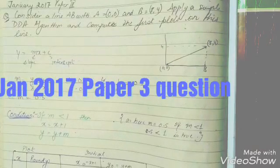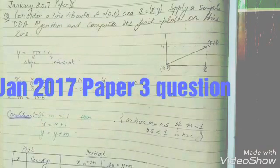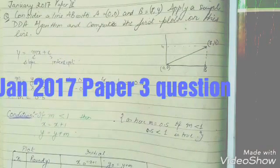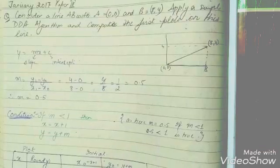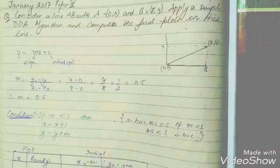This question was asked in January 2017, paper 3, on DDA algorithm. Consider a line AB with point A at 0, 0 and B at 8, 4. Apply a simple DDA algorithm and compute the first plots on this line.